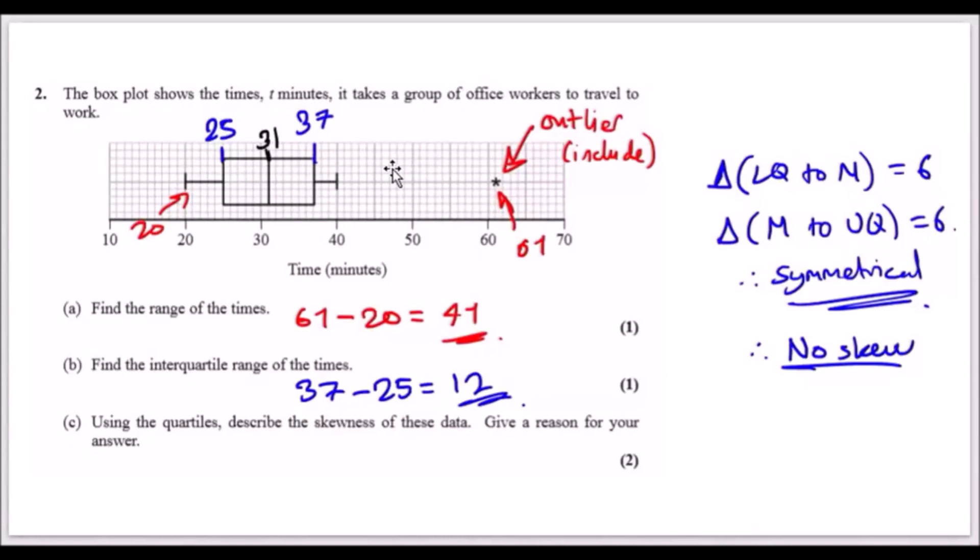Number two: the box plot shows the times in minutes it takes a group of office workers to travel to work. I just literally have everything here, all my solutions. We're going to walk through it now. The first thing you want to know is you've got this box plot: the lowest value is the minimum, and here is the maximum. Technically, because we have an outlier, the maximum is really over here at 61. This line is the lower quartile, this is the upper quartile, with this one bang in the center being the median.